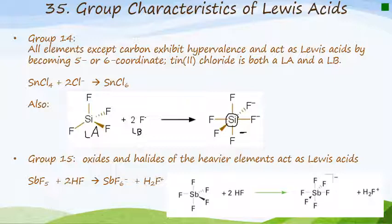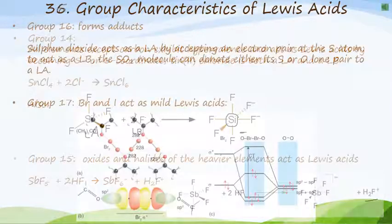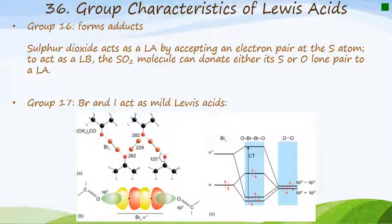If we go to group 15, the oxides and halides of the heavier elements will tend to act as Lewis acids, where in this case, the example is with antimony. Antimony pentafluoride can react with HF to give us this antimony hexafluoride ion plus this unusual cation over here. Group 16 also forms adducts. Sulfur dioxide can act as a Lewis acid by accepting an electron pair at the sulfur atom. And it can also act as a Lewis base, where the sulfur dioxide molecule can donate either its lone pairs on the sulfur or on the oxygen to another Lewis acid.